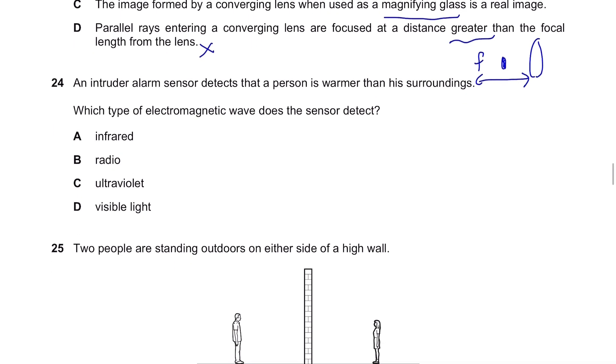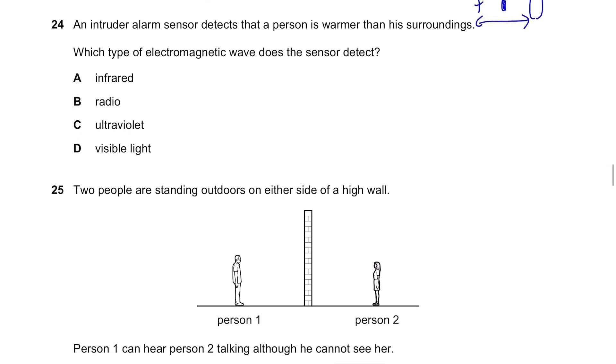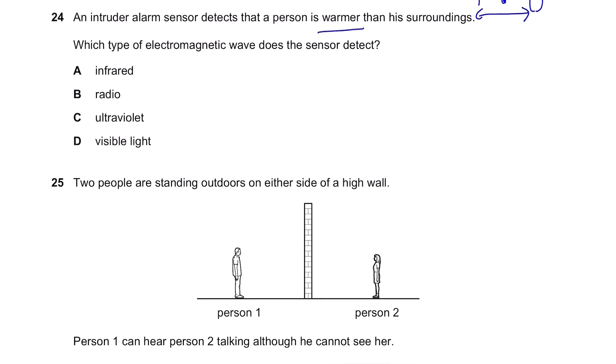Question 24. An intruder alarm sensor detects that a person is warmer than his surroundings. Which type of electromagnetic wave does the sensor detect? It's by detecting the change in temperature. They're all infrared radiation emitted by a person and the surroundings. So yeah, it's A.